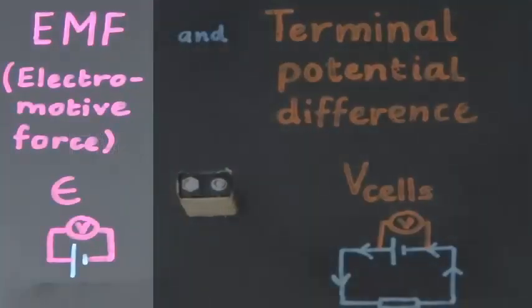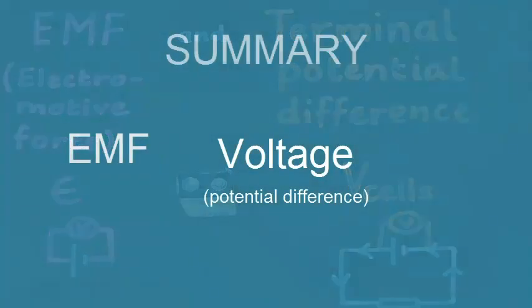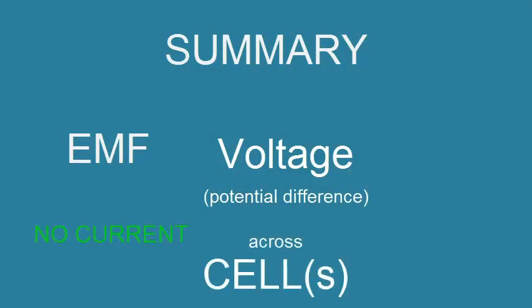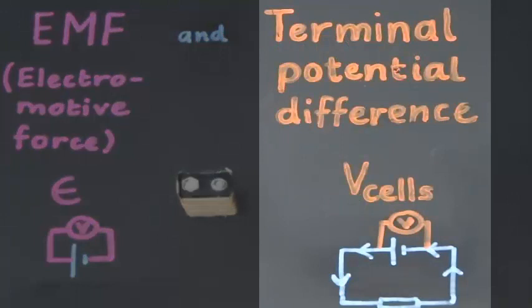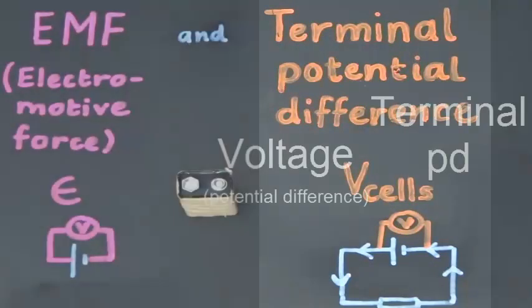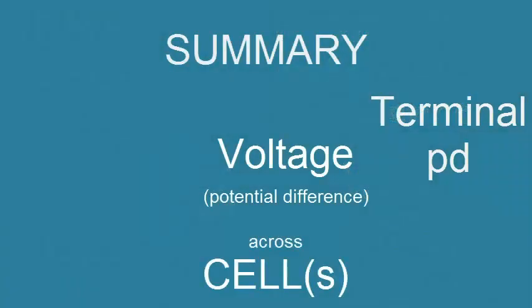In summary, EMF means electromotive force. It is the potential difference across a cell or battery where no current flows through the cell or battery. Terminal potential difference V cells is the voltage across a cell or battery when current does flow through the cell or battery.